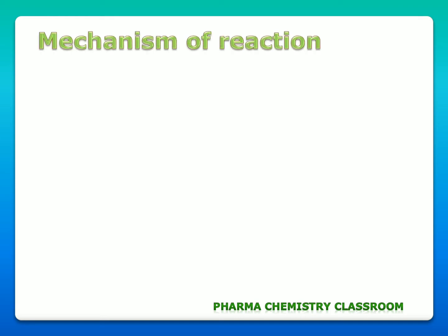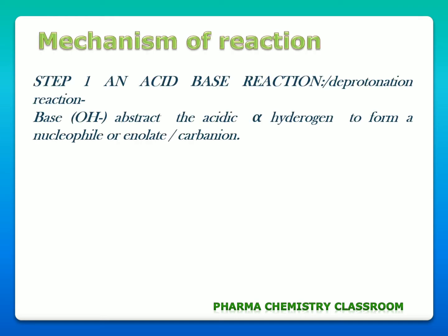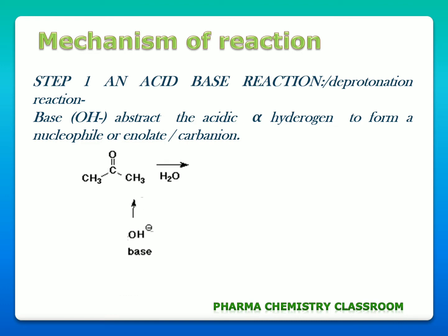Now we are going to see the mechanism of the reaction in detail. Step one is an acid-base reaction or a deprotonation reaction. In this step a base abstracts the acidic alpha hydrogen from our Michael donor to form a nucleophile or enolate — that is our intermediate of this reaction. This is our Michael donor which is a ketone; from this ketone a base abstracts its alpha hydrogen to get a carbanion compound. This is our first step in Michael addition reaction.